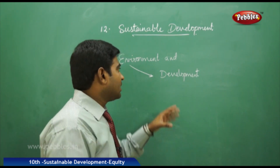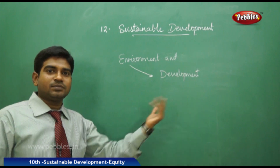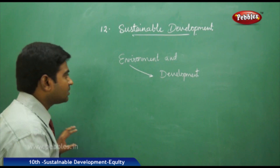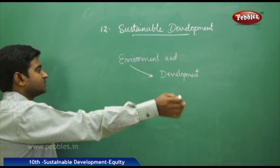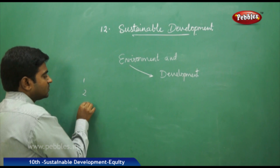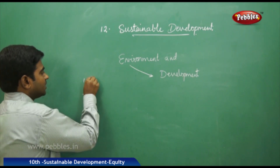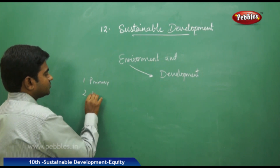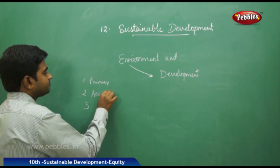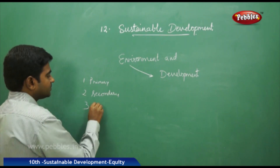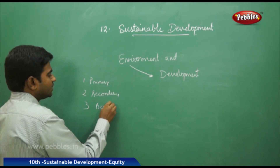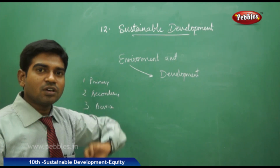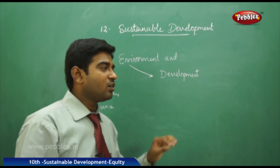Without having environment support, we can't do anything. For example, let us see the primary occupations. What are the primary sectors of work? We have three sectors: the first one is primary, the second one is secondary, and the third one is the service sector. In the primary sector, most things depend on the environment.